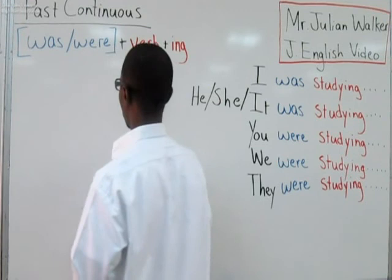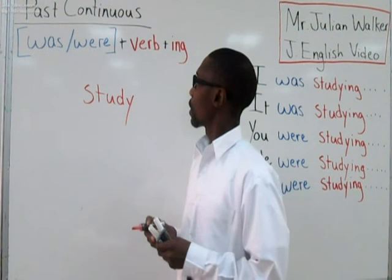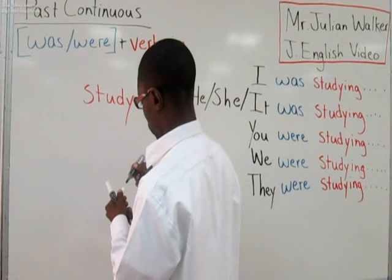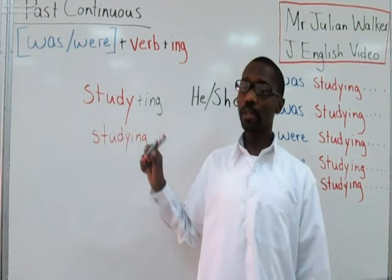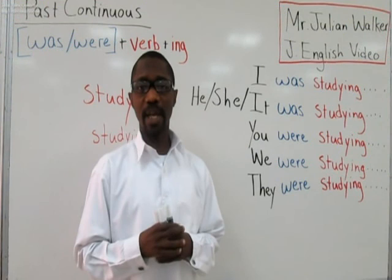Today we're going to conjugate the verb study. We have study here — this is the base form of the verb. According to our formula, you want to add ing. Study plus ing makes studying. So I have some examples where I am using the B verb in the past with the base form of the word and the ing.